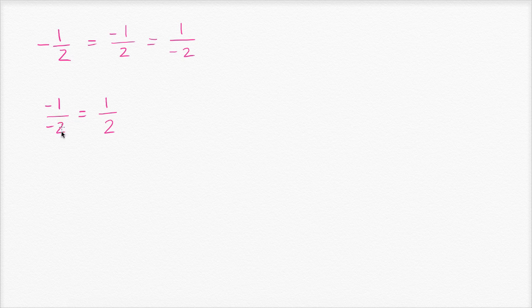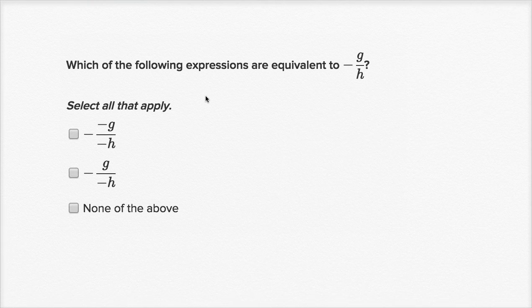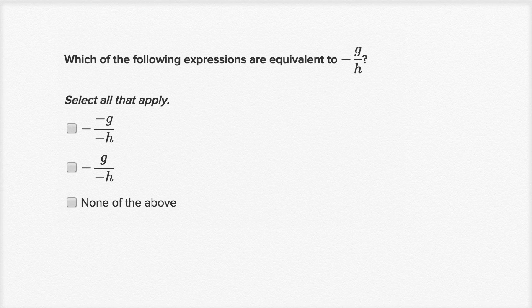Now with that out of the way, let's do some example problems that will push our thinking a little bit more. The first question: which of the following expressions are equivalent to negative g over h?